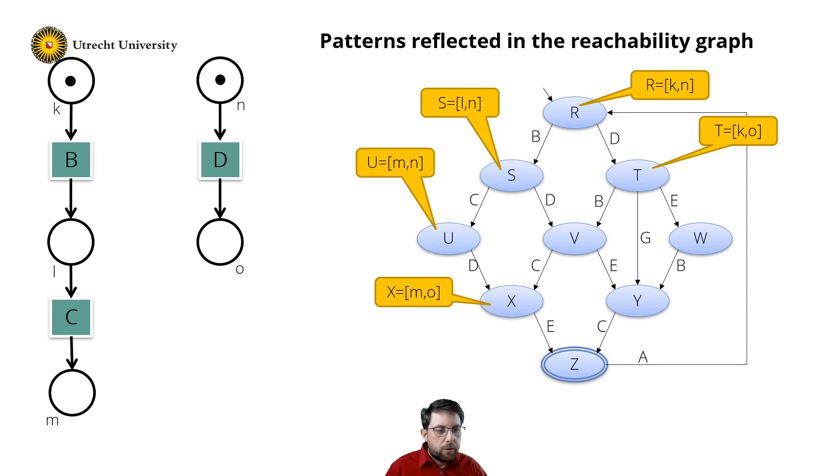Now let's look to the next diamond. Here we see transitions B and E concurrently.